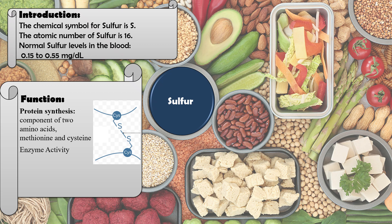Sulfur is involved in protein synthesis through the two amino acids methionine and cysteine. It also participates in enzyme activity, performs antioxidant activity, has immune functions, and helps maintain joint and skin health.